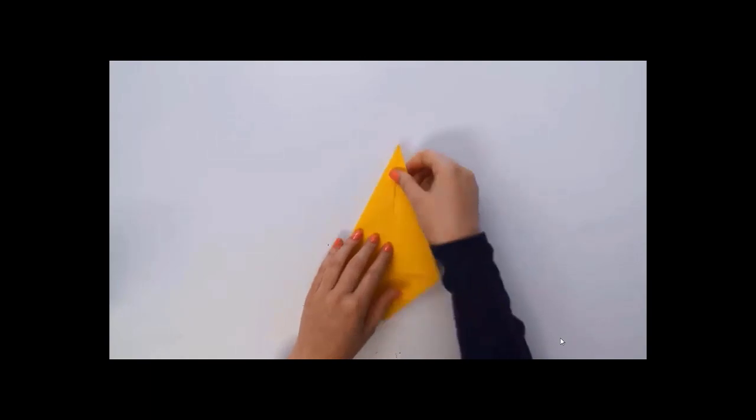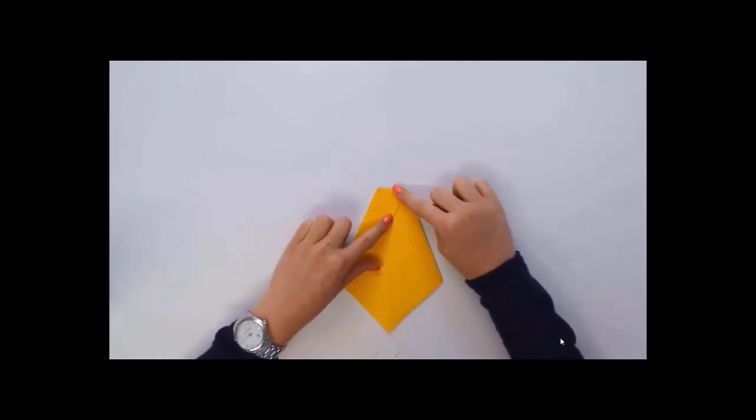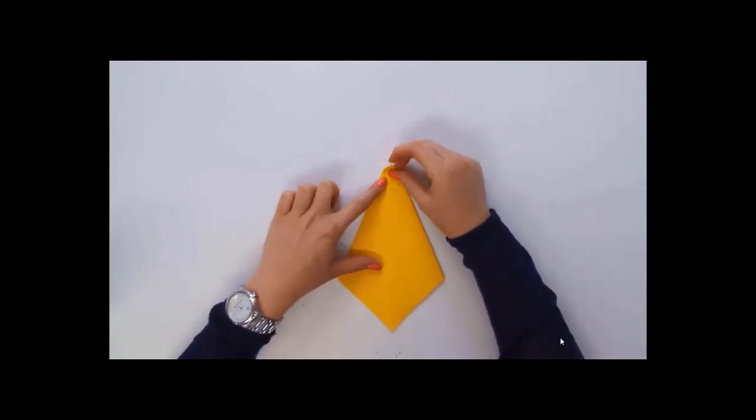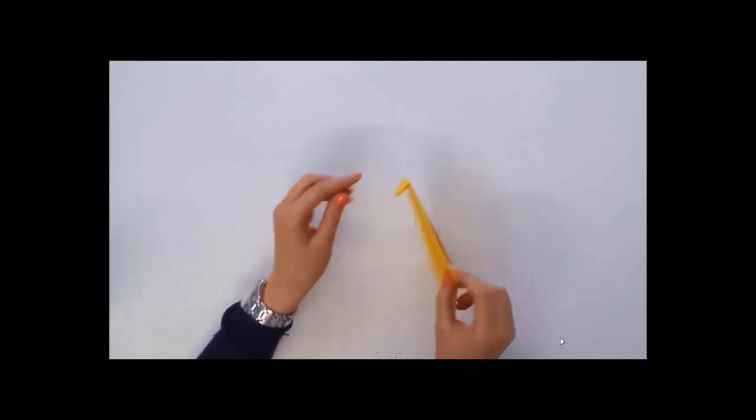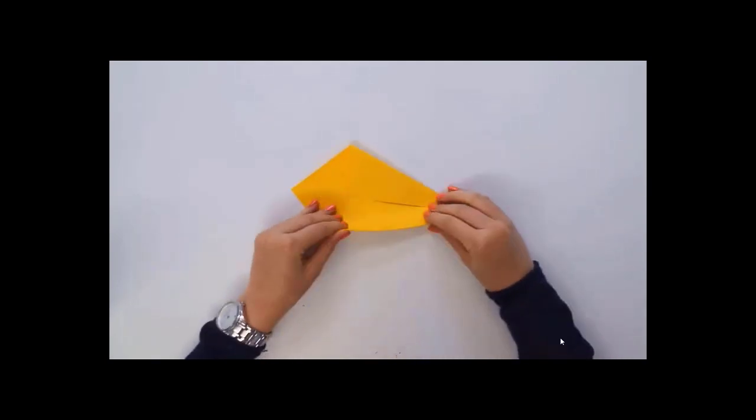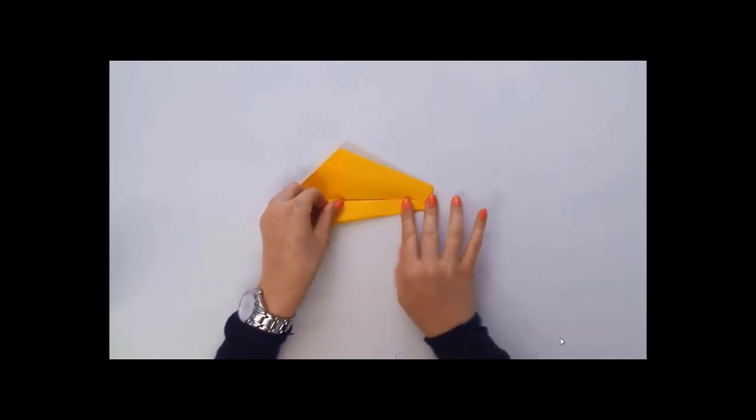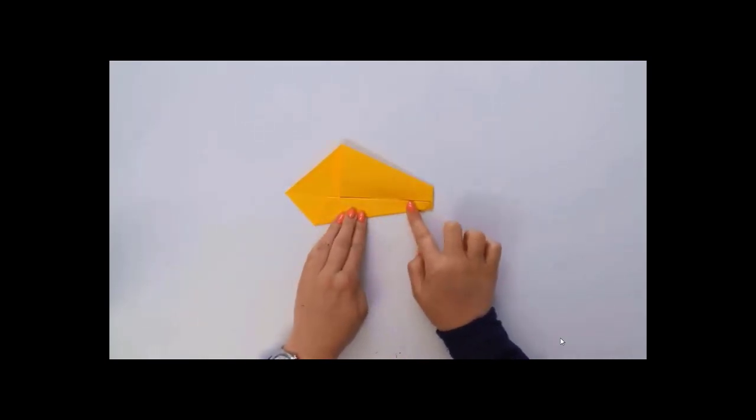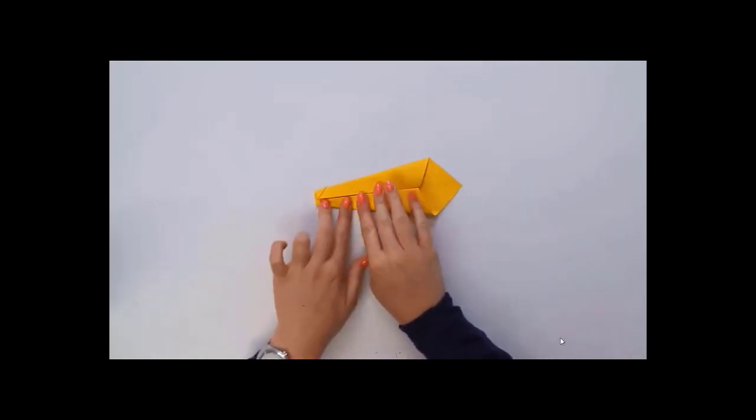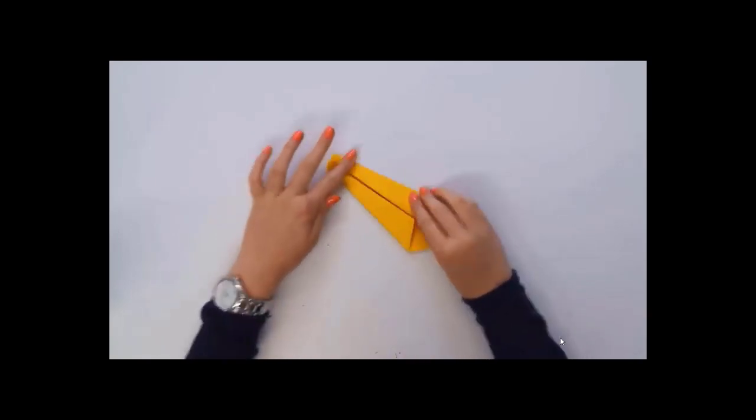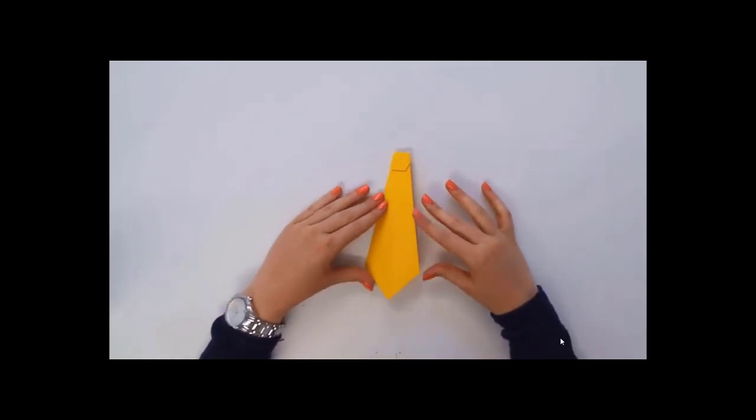Turn the side and bring the pointed edge down. Fold it again. Now, both sides को center fold तक again fold करें. Center fold तक आपने fold करना है. Turn around and see it looks like a tie.